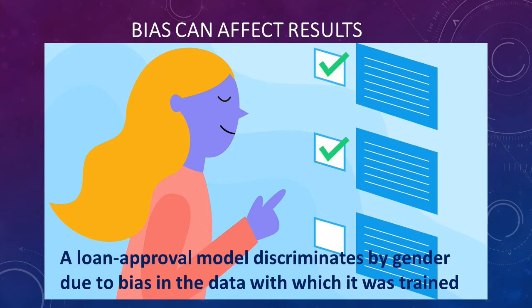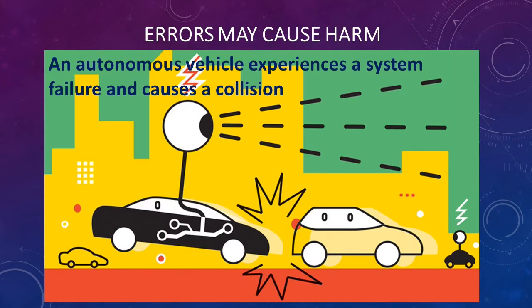The first challenge is that bias can affect results. An example could be a loan approval model which unintentionally discriminates by gender due to bias in the data with which it was trained. Another challenge or risk is that errors may cause harm.